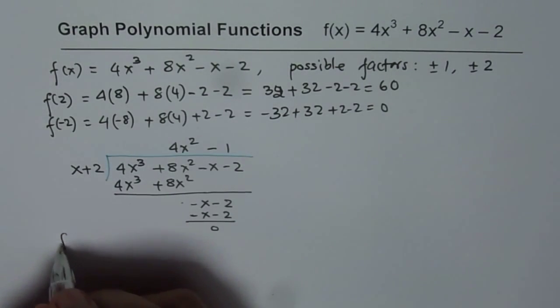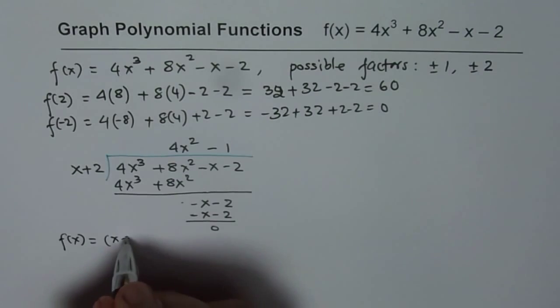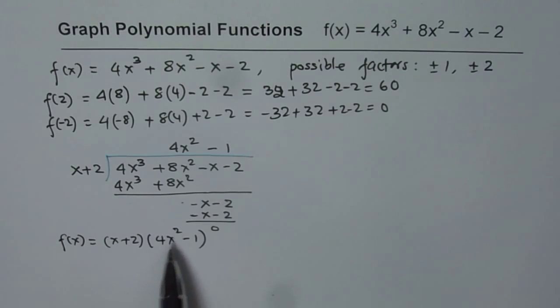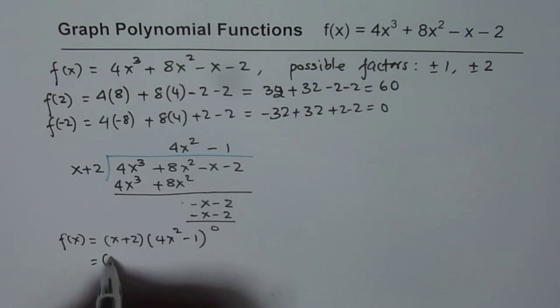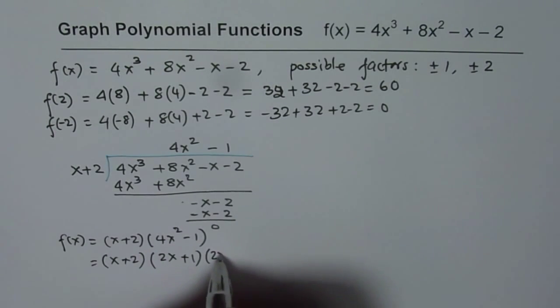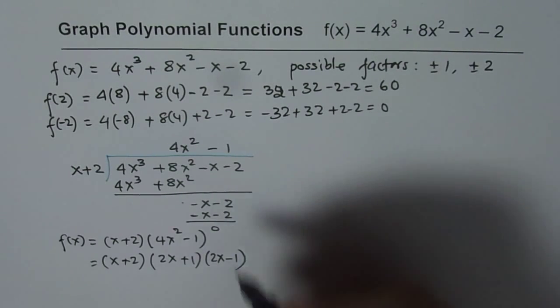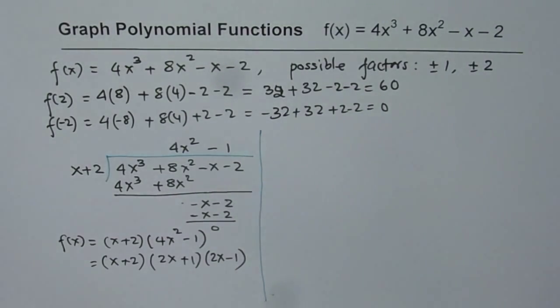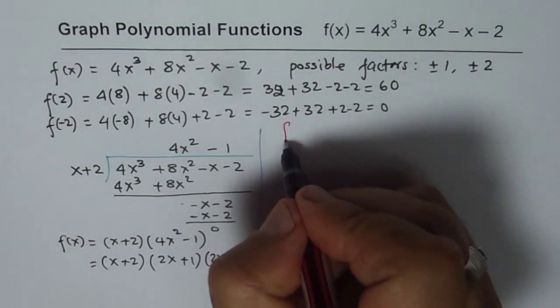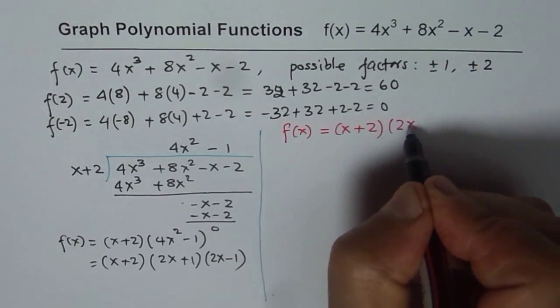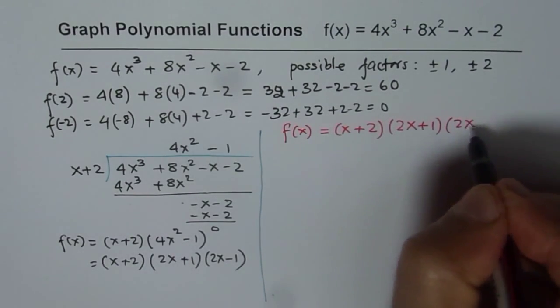So now we can write f of x as equal to x plus 2 times 4x squared minus 1. Now, 4x squared minus 1 is a perfect square, which we can write as x plus 2 times 2x plus 1 times 2x minus 1. So finally, we get our function in factored form.